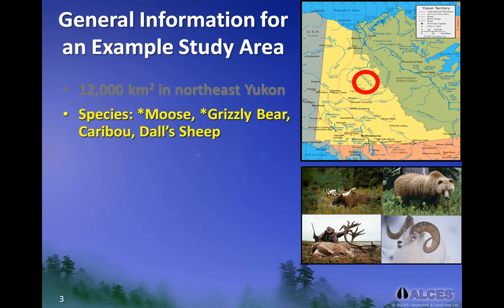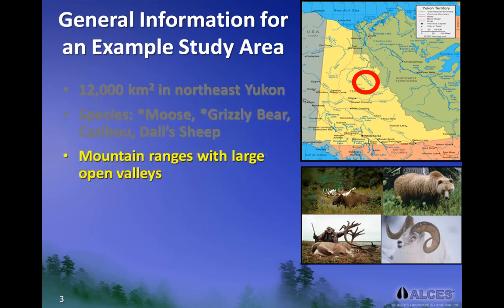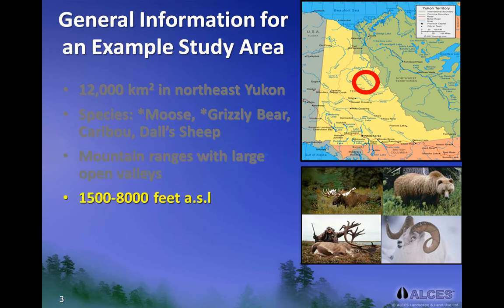The study area occurs within the Peel River watershed and can be described generally as large mountain ranges with large open valleys. Average elevation in the study area was about 1,500 to 8,000 feet above sea level, which in metric is about 460 to 2,400 meters above sea level. And there is no road access, which again highlights that the area is remote.